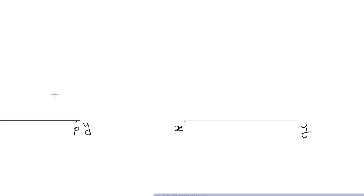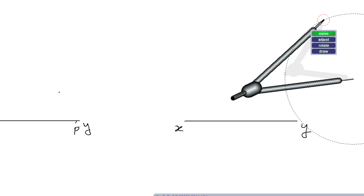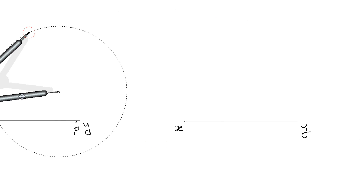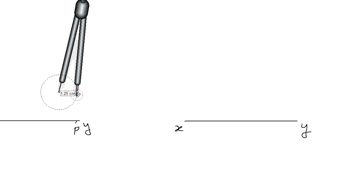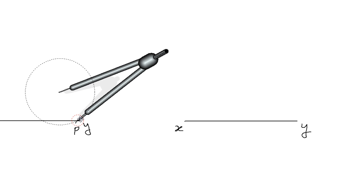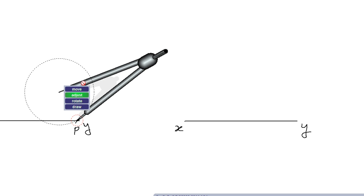To do that, I can take any point O — maybe on the top side or maybe on the bottom side of line XY. Let us say this is point O. Now take the compass, bring it to point O, and take a radius approximately equal to OP. Check it properly — it should be OP approximately.